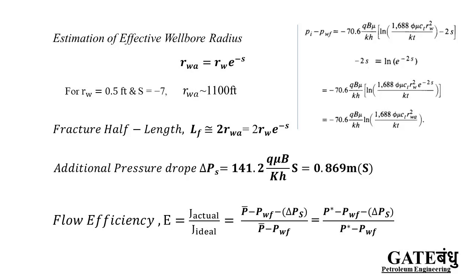From a simple transient test analysis, we can estimate permeability, skin, effective wellbore radius, fracture half-length, pressure drop due to skin, and flow efficiency. Flow efficiency measures how effectively the wellbore completion has been done — when flow efficiency is high, the completion is good. This guides selection of the most effective completion technique to minimize ΔP_skin and reduce hindrance to fluid flow entering the wellbore.